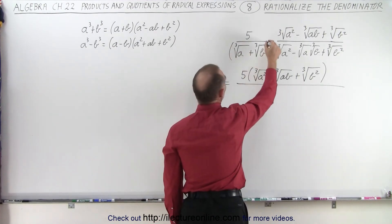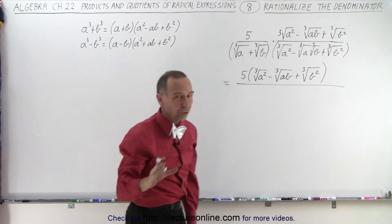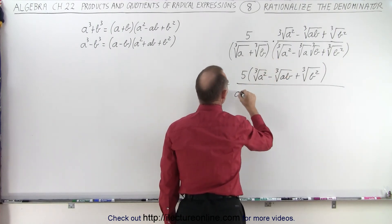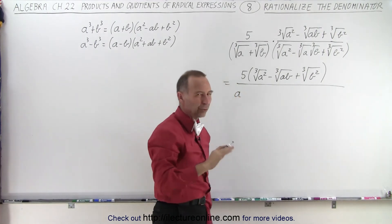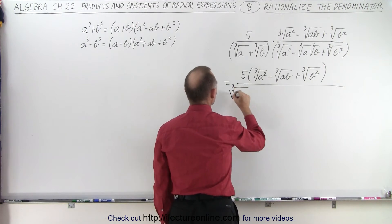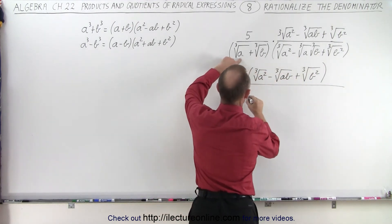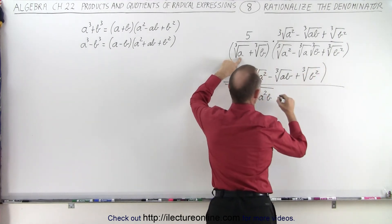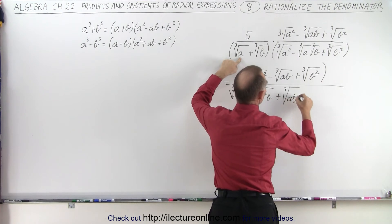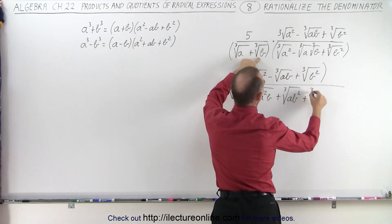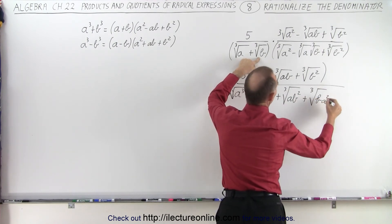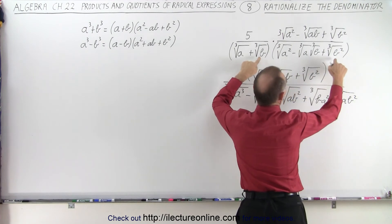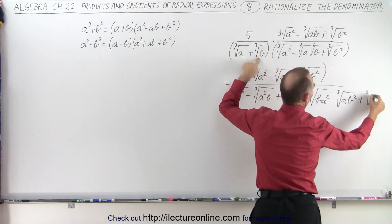We're going to multiply these two terms by those three terms, ending up with six terms in the denominator. First, the cube root of a times the cube root of a squared gives us the cube root of a cubed, which is simply a. Then minus the cube root of a squared times b, plus the cube root of a times b squared, plus the cube root of b times a squared, minus the cube root of a times b squared, and finally plus the cube root of b cubed.